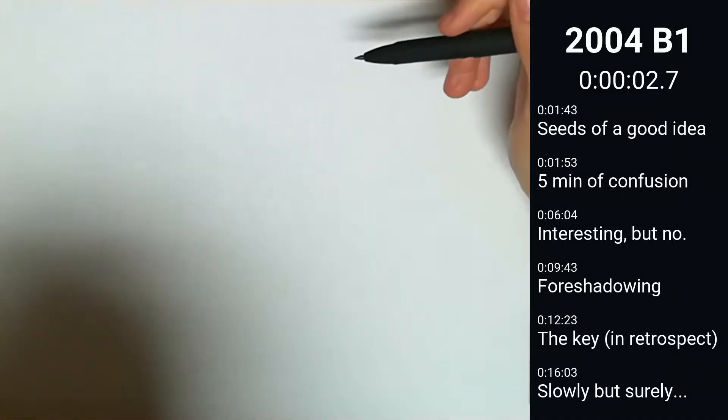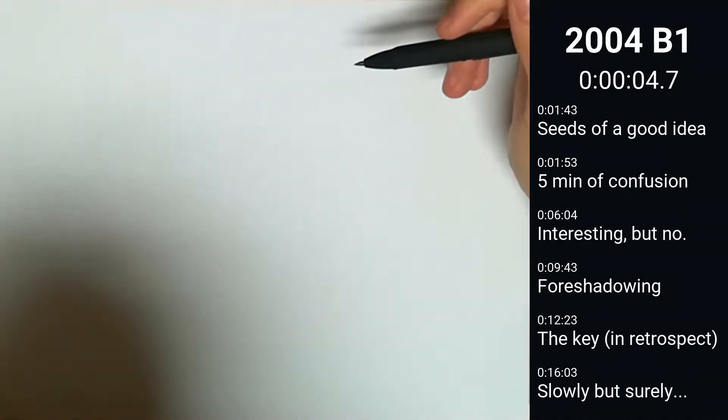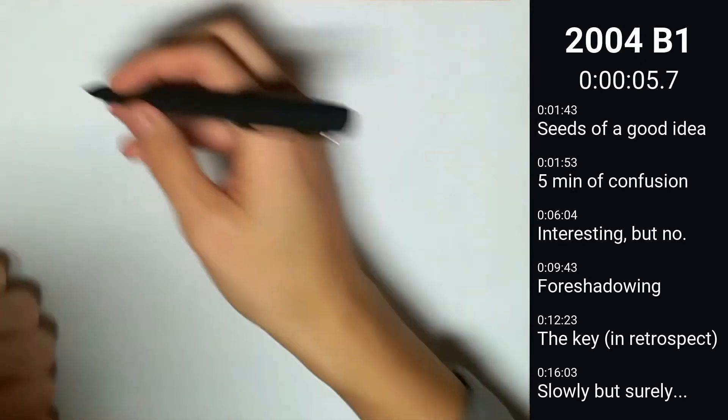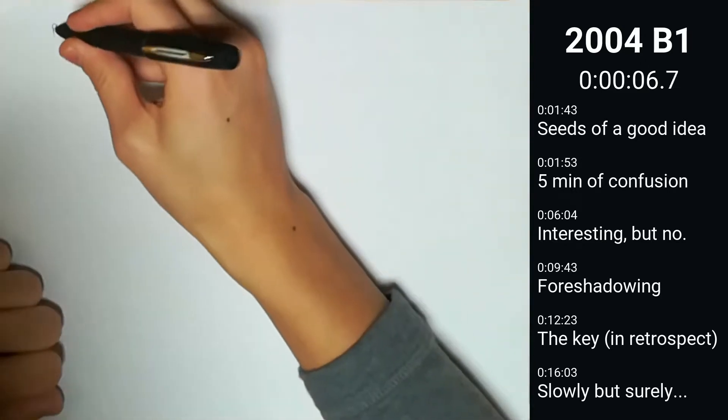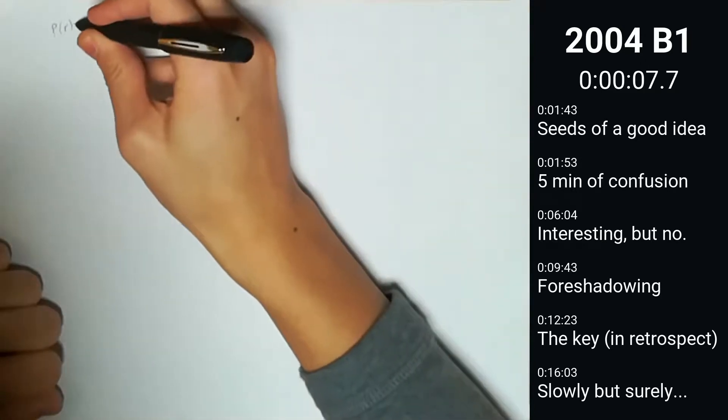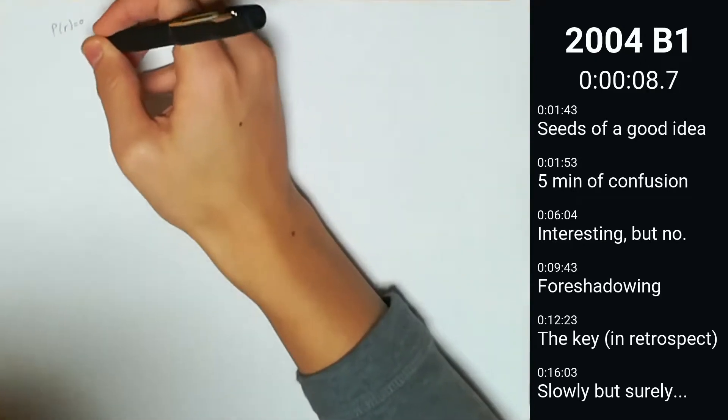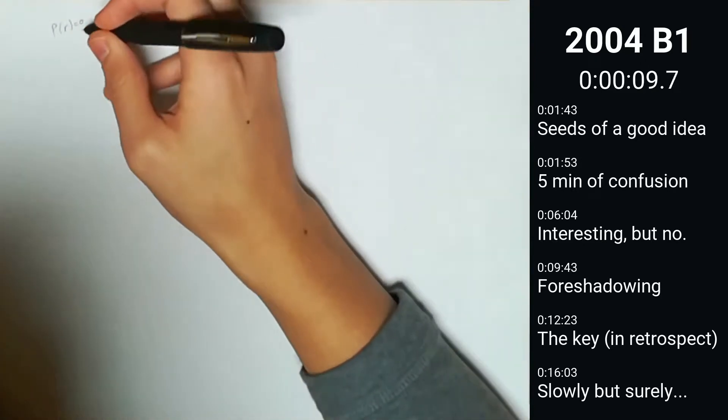We have r, a rational number that satisfies the root of that polynomial. The first thing that comes to mind is the rational root theorem.